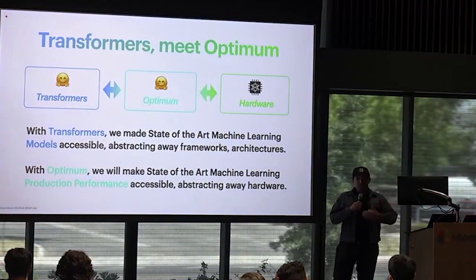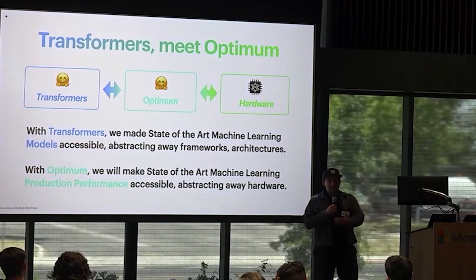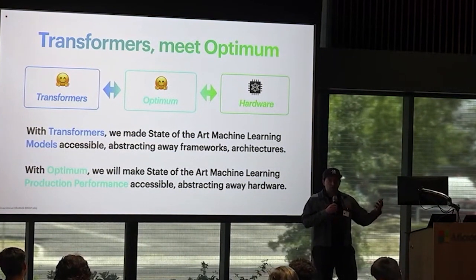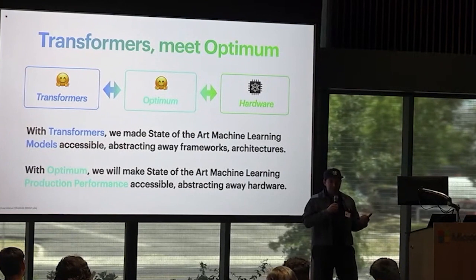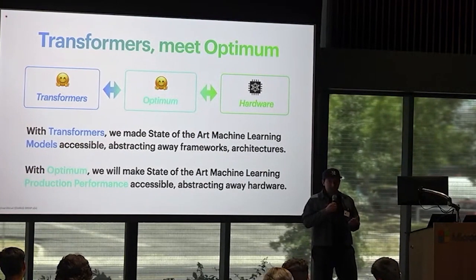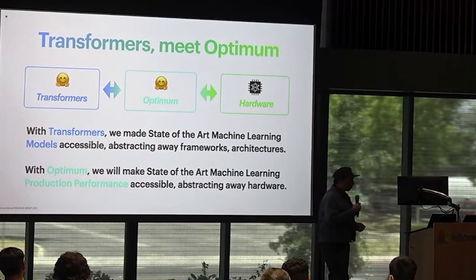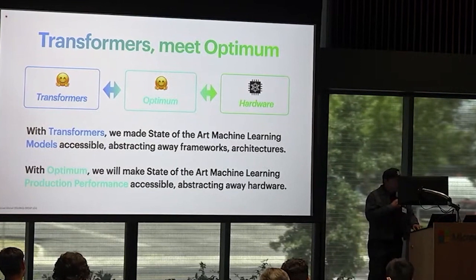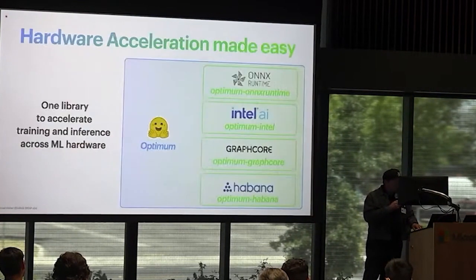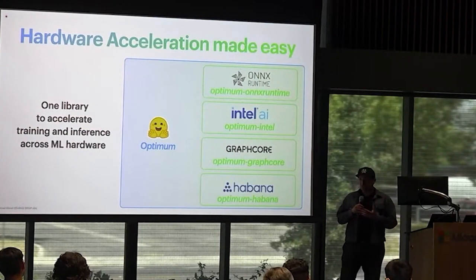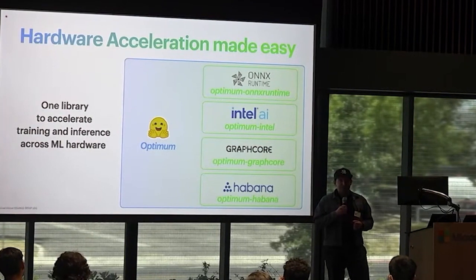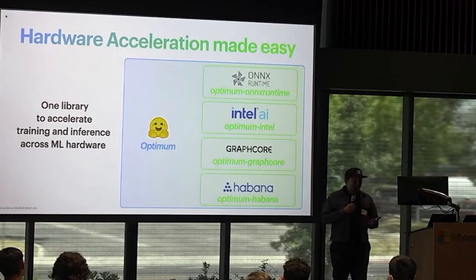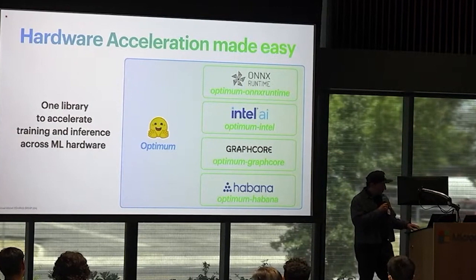Optimum is the bridge between the Transformers library and hardware peak performance. In the same way that Transformers made models accessible through a high level of abstraction and easy-to-use APIs, we want to do the same for hardware acceleration. Today Hugging Face Optimum is a single library through which you can get peak performance leveraging acceleration solutions from our partners — ONNX Runtime, Intel, Graphcore, and Habana — all within the Optimum package.